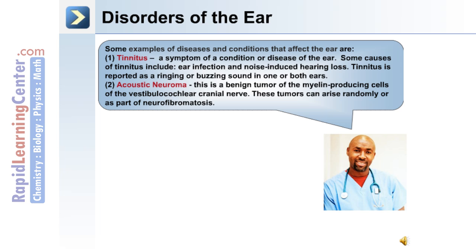The following are some diseases and conditions that affect the ear. First, tinnitus is a symptom of a condition or disease of the ear; causes include ear infection and noise-induced hearing loss, and it is reported as a ringing or buzzing sound in one or both ears. Second, acoustic neuroma is a benign tumor of the myelin-producing cells of the vestibulocochlear cranial nerve; these tumors can arise randomly or as part of neurofibromatosis.